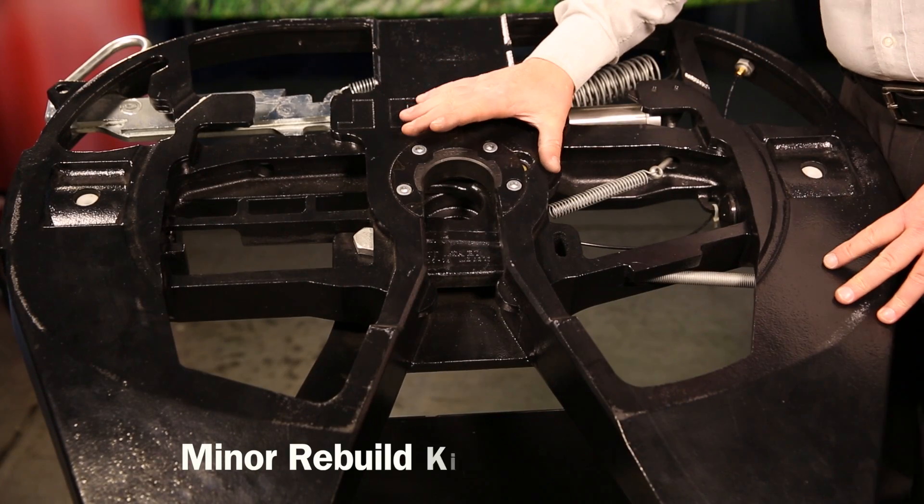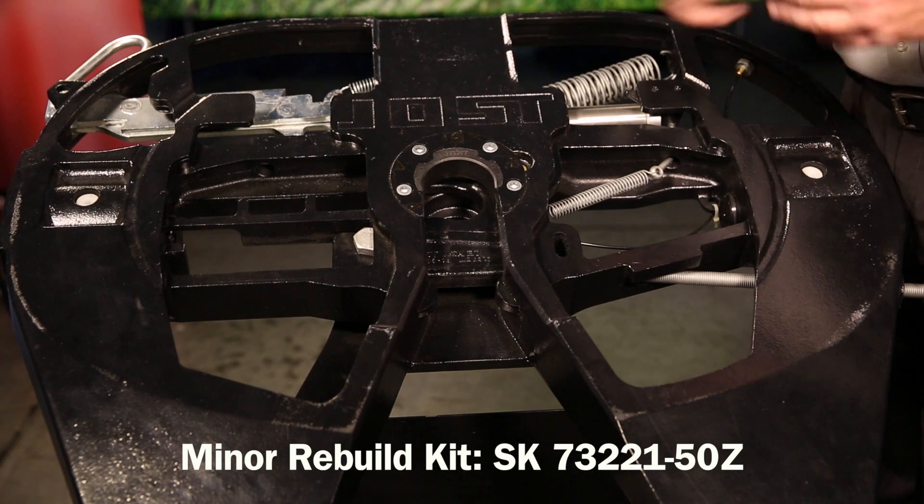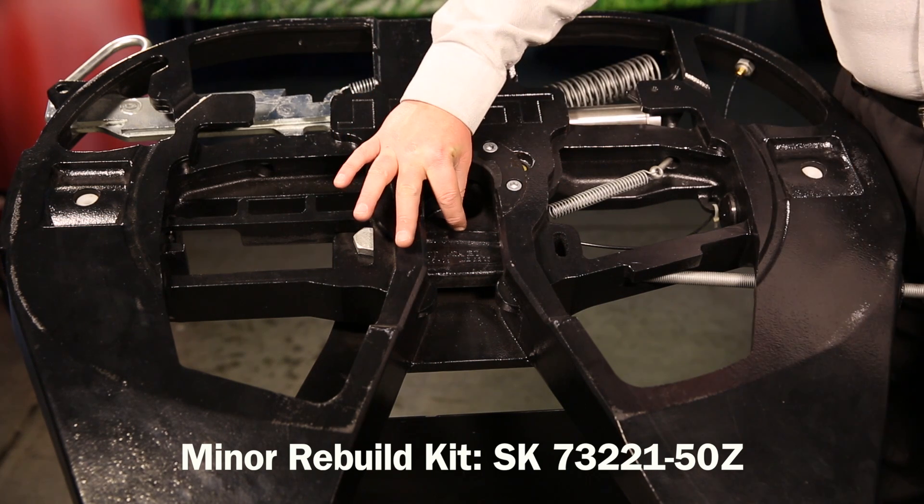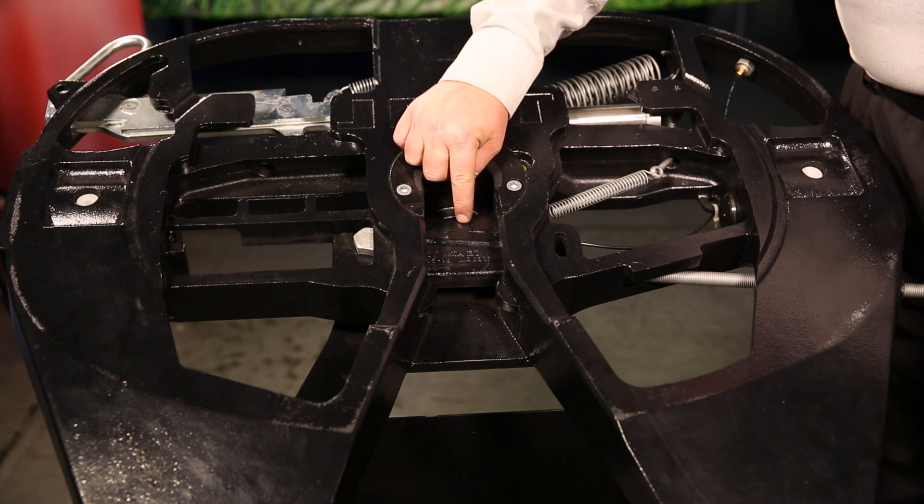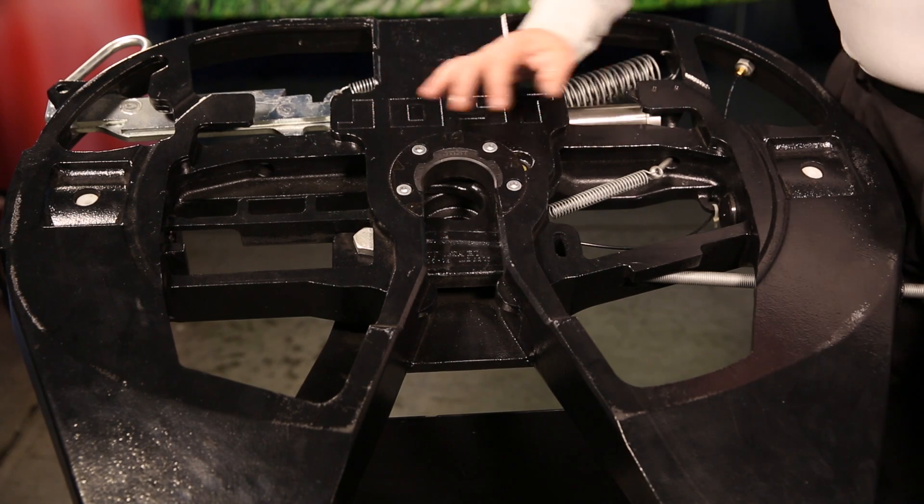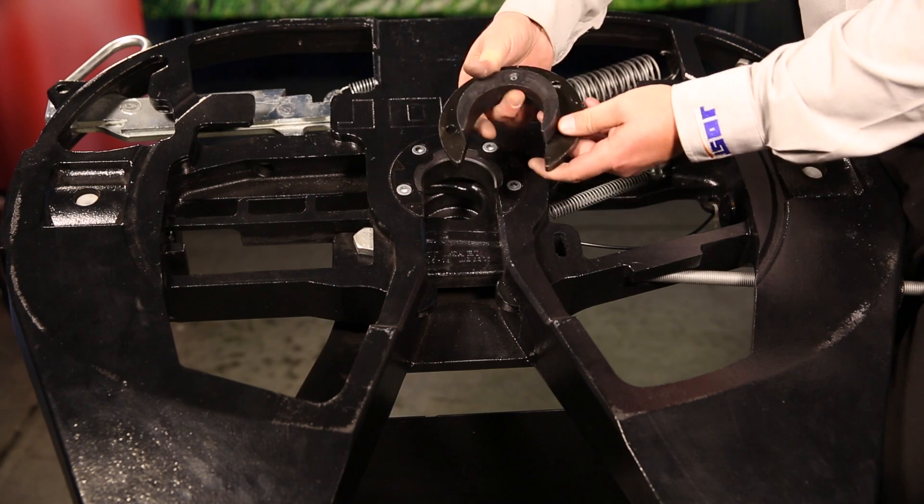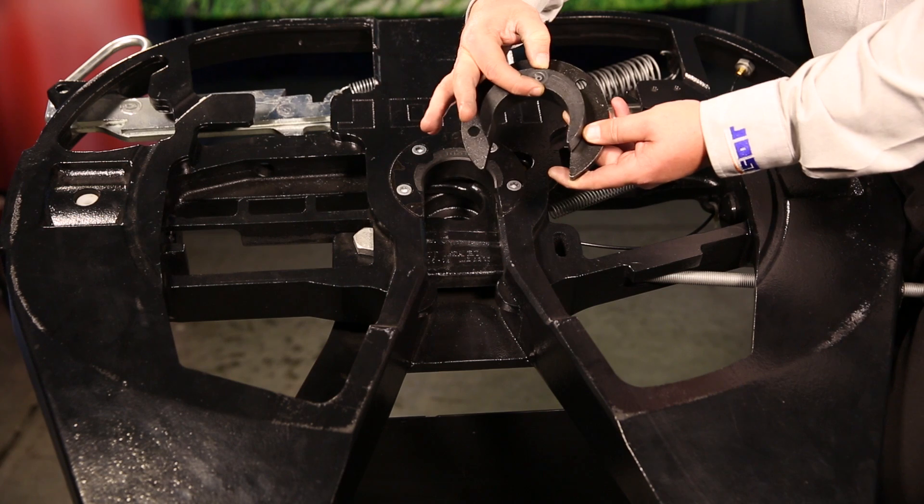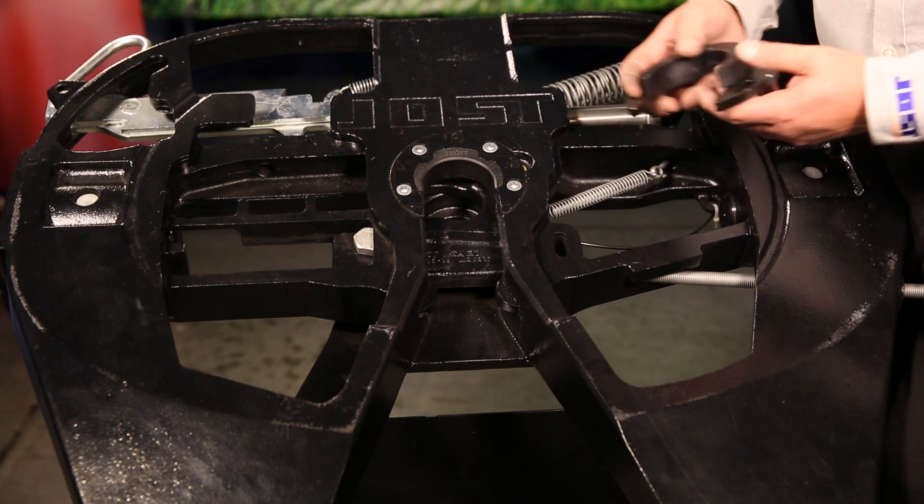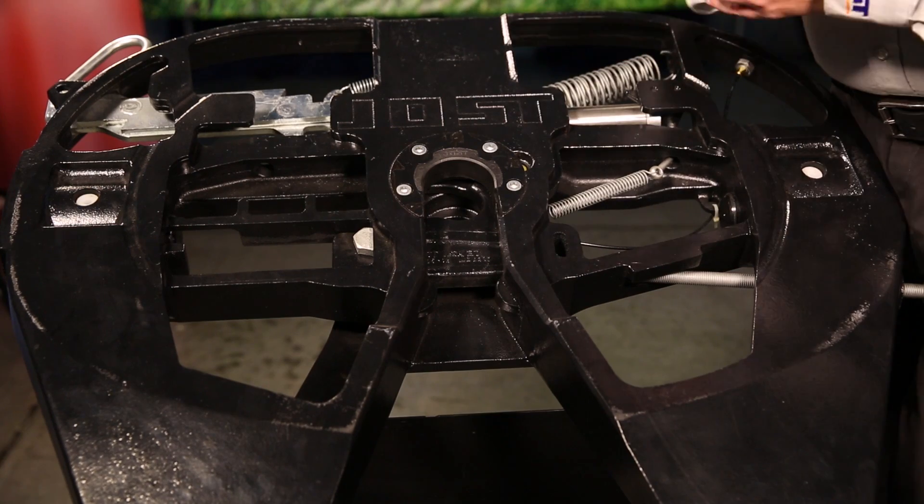How to tell when the Jost fifth wheel needs to be rebuilt. With the official Jost documentation, what you're looking for is 0.69 or less from the bottom of the jaw or on the cushion ring. If you take this cushion ring out, on the back side, 0.69 or less, this needs to be rebuilt. The fifth wheel needs to be rebuilt. Very simple rebuild on the fifth wheel.